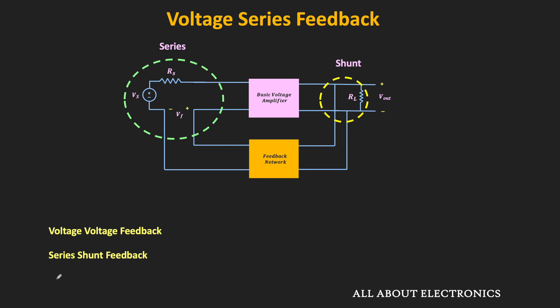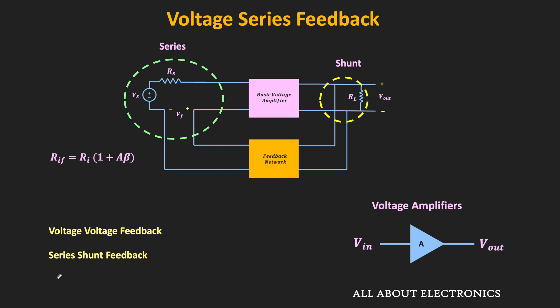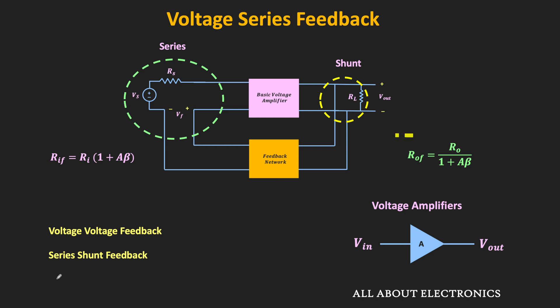This type of feedback is mainly suitable for voltage amplifiers, because the input signal is voltage and the output is also voltage. In this topology, since there is series mixing on the input side, the input impedance of this feedback amplifier will increase. And on the output side, since we have the shunt connection, the output impedance will reduce. If Ri is the input impedance of the basic voltage amplifier, then with feedback it increases by the factor (1 + Aβ). Similarly, if R0 is the output impedance, then with feedback it reduces by the factor (1 + Aβ).